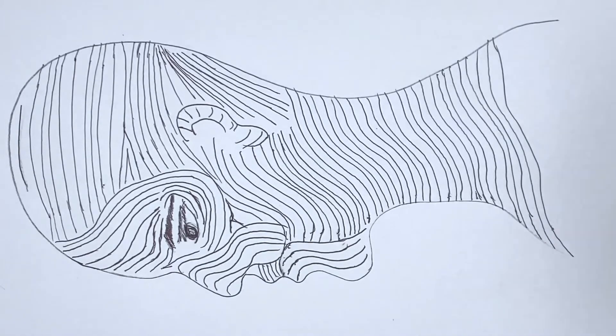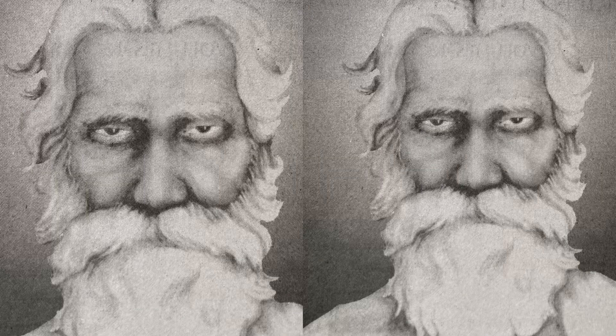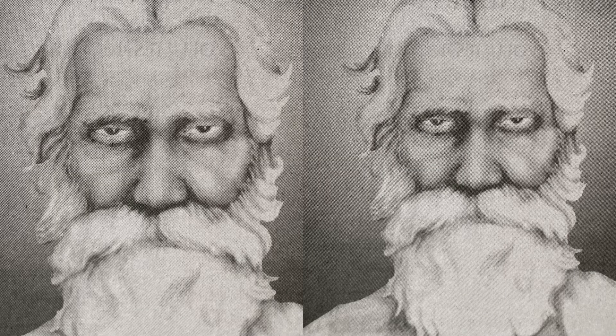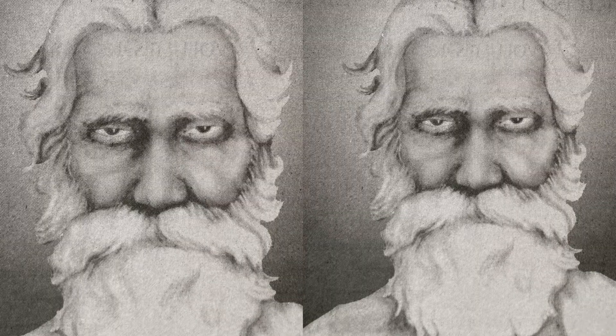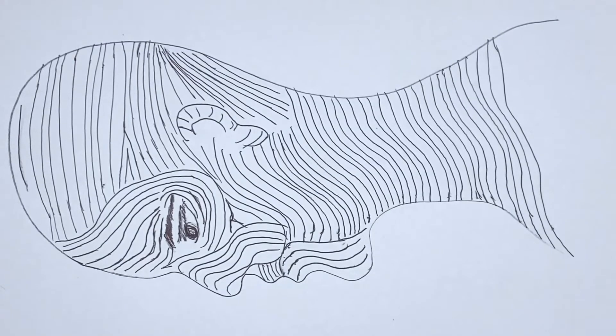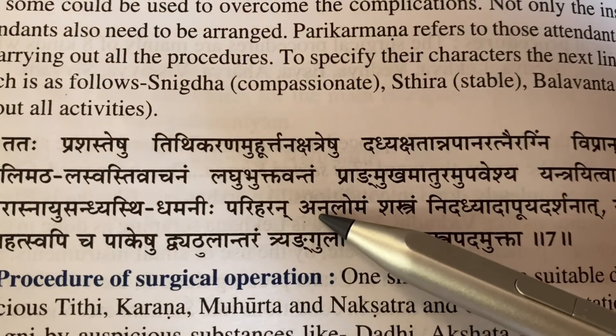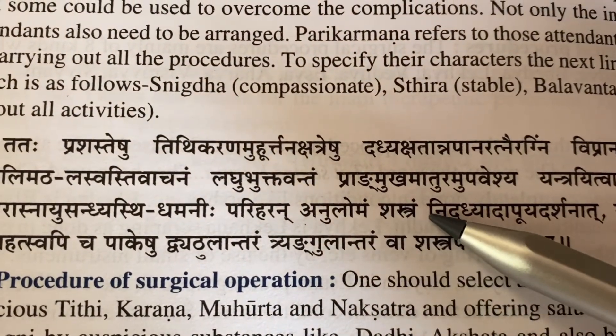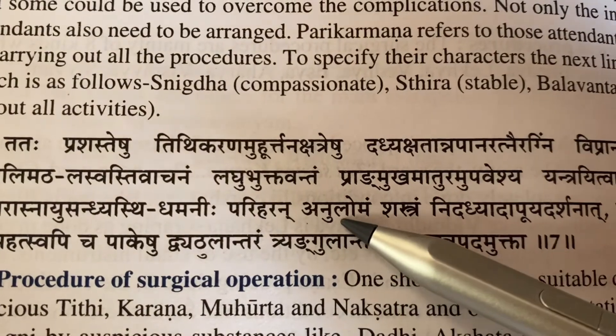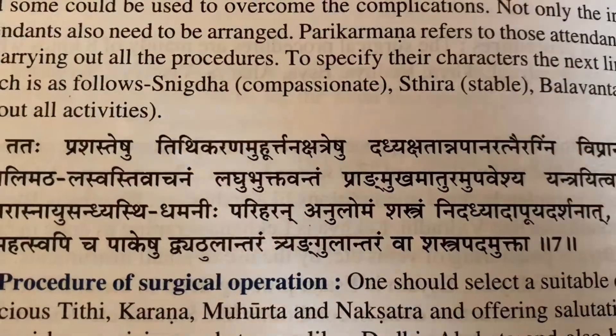If you go a bit earlier, like what Susruta has told, nearly about 2000 to 5000 BC in his Susruta Sutrasthana fifth chapter, seventh sloka, he has told Anuloma Shastram, which means along the direction of the hairs. If along the direction of hairs you take the incision, that will help us to have a better outcome.